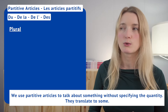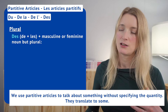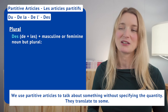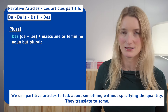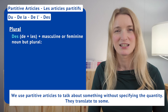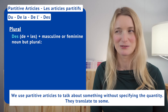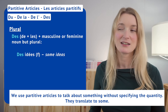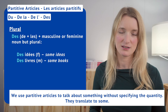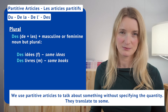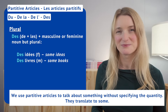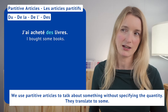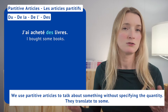For the plural, we use des, and it doesn't matter if the noun is masculine, feminine, or whether it starts with a vowel or a consonant — as long as it's plural we use des. For example: des idées — feminine — and des livres — masculine, 'some books.' Example sentence: j'ai acheté des livres — we don't know how many.